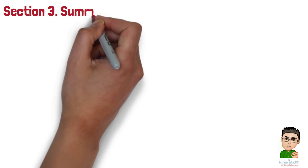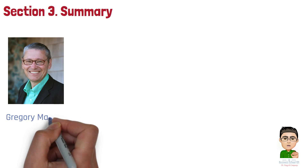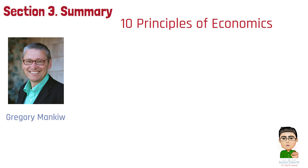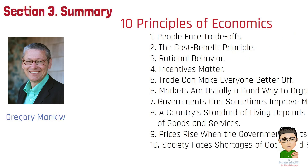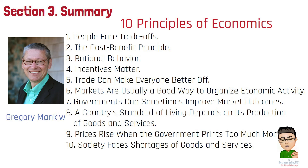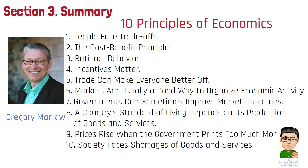To sum up, Gregory Mankiw's 10 Principles of Economics is a widely used textbook in introductory economics courses. The ten principles are: 1) People face trade-offs; 2) The cost-benefit principle; 3) Rational behavior; 4) Incentives matter; 5) Trade can make everyone better off; 6) Markets are usually a good way to organize economic activity; 7) Governments can sometimes improve market outcomes; 8) A country's standard of living depends on its production of goods and services; 9) Prices rise when the government prints too much money; 10) Society faces shortages of goods and services.